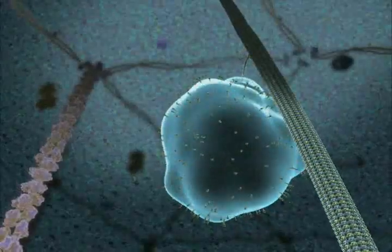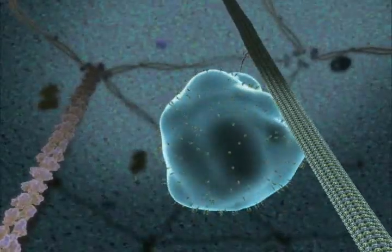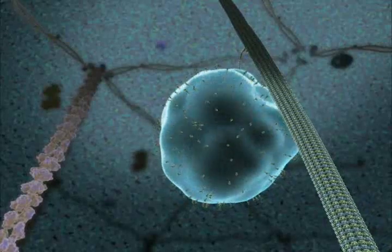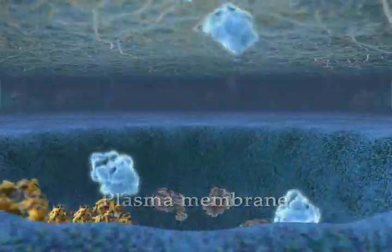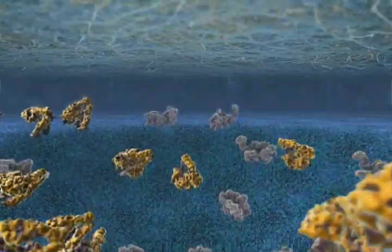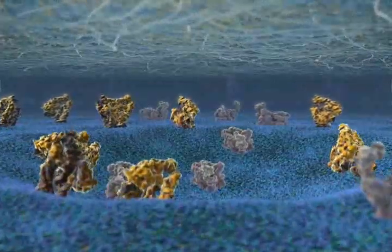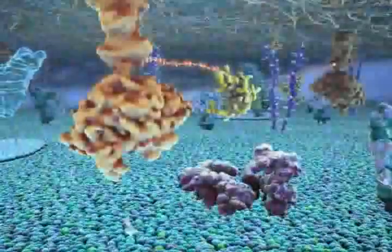From the Golgi apparatus to the plasma membrane, vesicles carry proteins. When a vesicle fuses with the plasma membrane, proteins contained in the vesicle's lumen are secreted, and proteins embedded in the vesicle's membrane diffuse in the cell membrane.